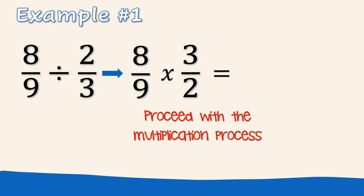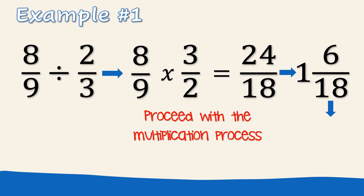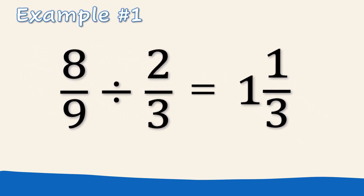We will proceed with the multiplication process since we have a multiplication symbol between the two fractions. So that will be 8 times 3, which is 24, and 9 times 2, which is 18. You can also use the cancellation method discussed in our previous video about multiplication of fractions. Since we have an improper fraction, we are going to change this into a mixed number by dividing the numerator by its denominator, and reduce it to its lowest term. Therefore, 8 ninths divided by 2 thirds equals 1 and 1 third.